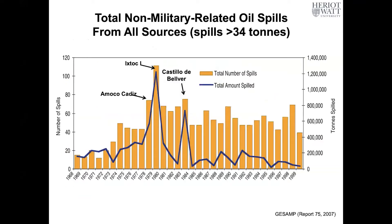This next slide shows all the major spills — more than 34 tons — that have spilled oil into the sea from any non-military source. A major take-home message here is that oil spills in the sea occur frequently in one shape or form every year. There can be up to more than 100 spills in a single year around the world, and the volumes of oil that enter the marine environment can range from hundreds to thousands of tons to over millions of tons. So from human activities, we release a lot of oil accidentally into the sea every single year.